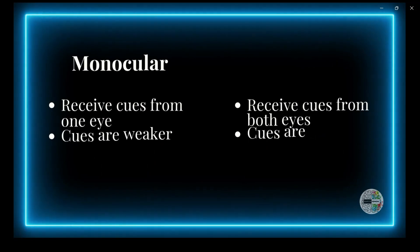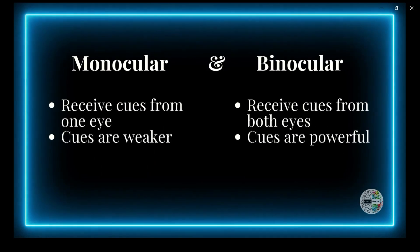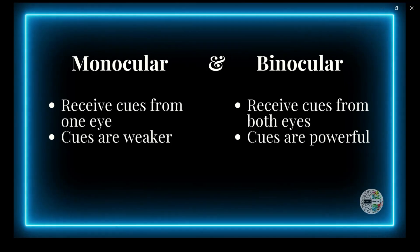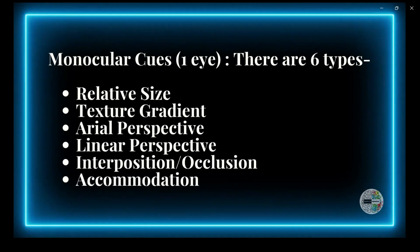Monocular cues are ways your brain judges depth and distance using only one eye, while binocular cues use both eyes together. Monocular cues are weaker compared to binocular cues, which are more powerful. There are six types of monocular cues.